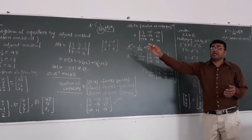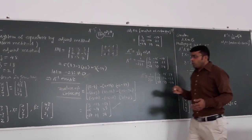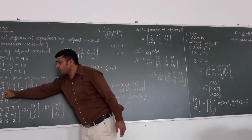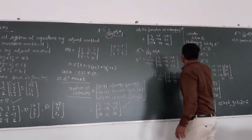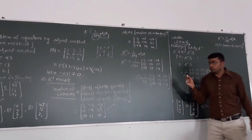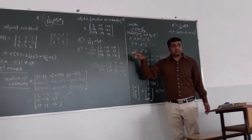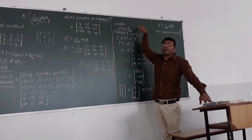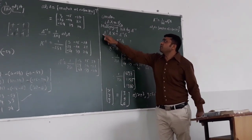Now we find the solution to the system of linear equations. We have AX = B. To isolate X, we multiply both sides by A inverse. So: A inverse × A × X = A inverse × B.